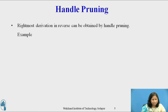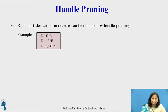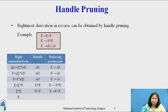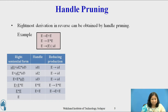Rightmost derivation in reverse can be obtained by handle pruning. Consider the grammar and the input string id1 plus id2 into id3. The sequence of reductions shown in the first table reduces id1 plus id2 into id3 to the start symbol E.